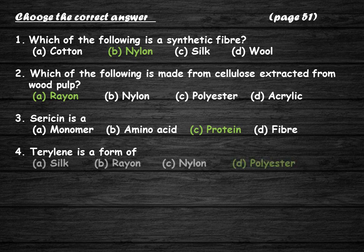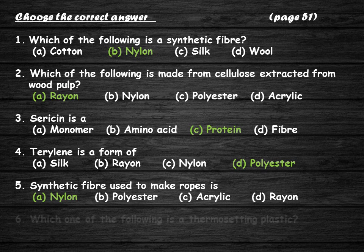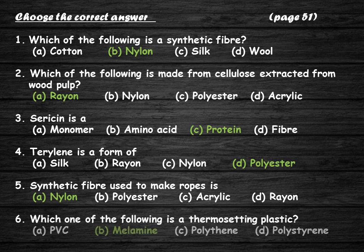The answer to question number four is option D — polyester; terrylene is a popular form of polyester used to make fabrics. The answer to question number five is option A — nylon; nylon has high tensile strength, due to which it is used to make ropes. The answer to question number six is option B — melamine, because the rest of the options are all thermoplastics.